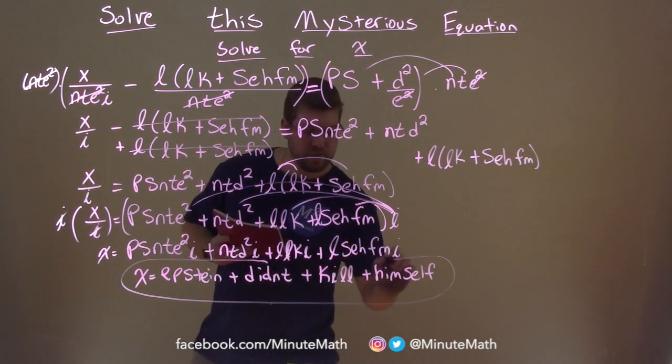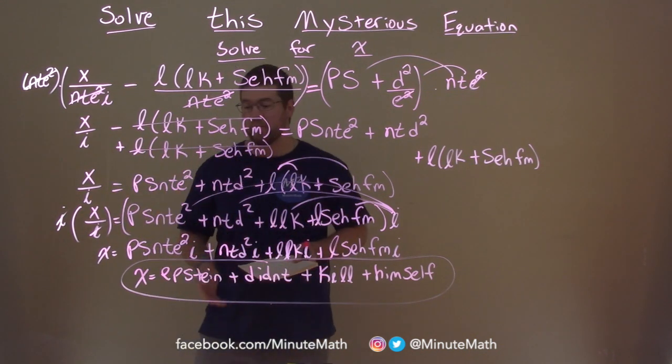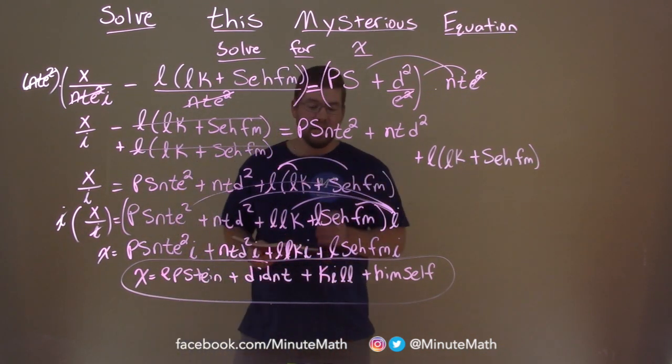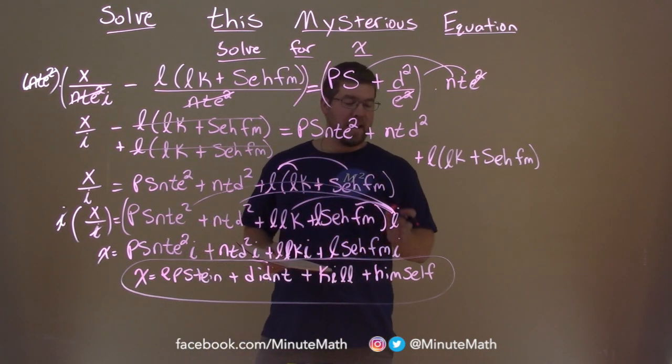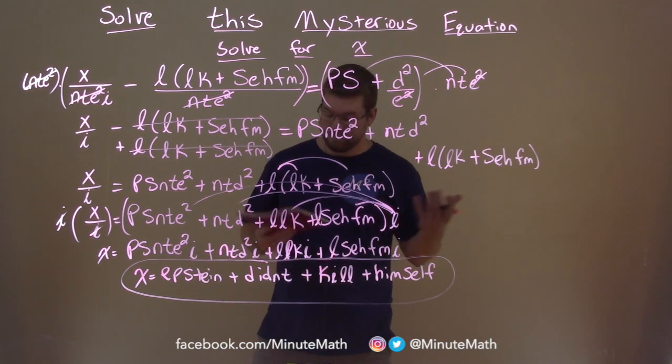And so our final answer here, once x is by itself, is just x equals e, p, s, t, e, i, n, plus d, i, d, n, t, plus k, i, l, l, plus h, i, m, s, e, l, f.